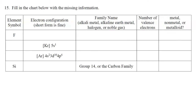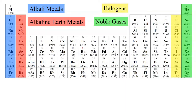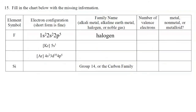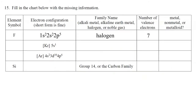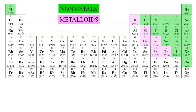Number fifteen, part one — fluorine: it has 9 electrons and the electron configuration 1s²2s²2p⁵. The family name is halogen (group 17). Since fluorine is in group 17, it has 7 valence electrons. The periodic table shows group 1 has 1 valence electron, group 2 has 2, group 13 has 3, and so on up to the noble gases. Since fluorine is in the green nonmetal region, it is classified as a nonmetal.